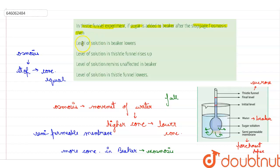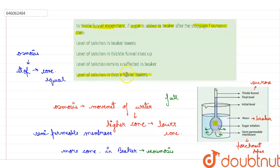The first option says the level of solution in the beaker will lower — incorrect, it will become higher. The second option says the level in the thistle funnel rises — also incorrect, since water moves out, the level reduces. The third option says the level remains unaffected — incorrect, as both are affected. The fourth option says the level of solution in the thistle funnel lowers — that is correct, because water moves out and the level falls. So the correct option is option 4.